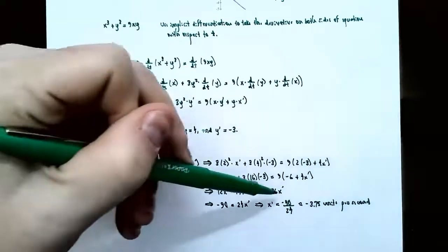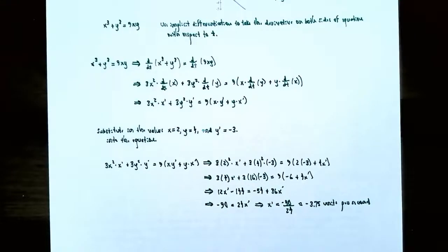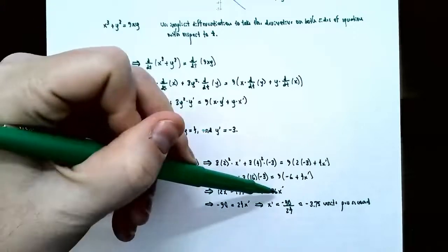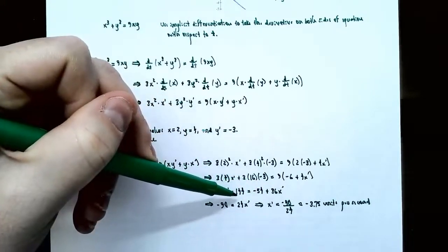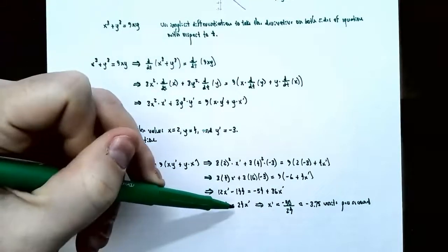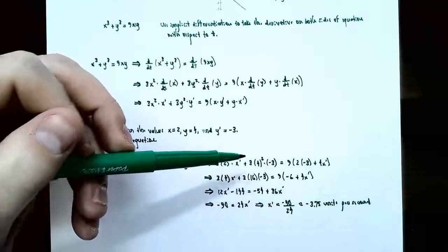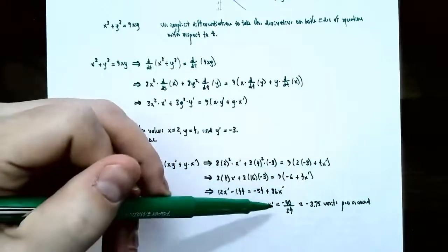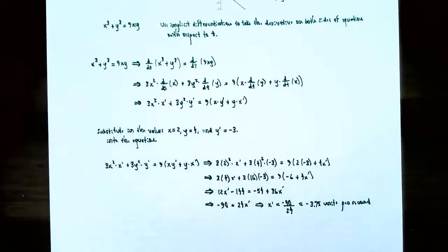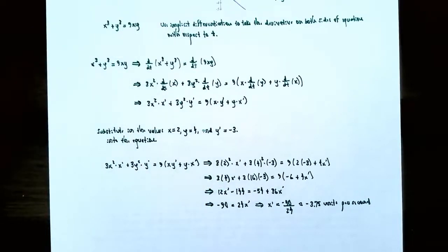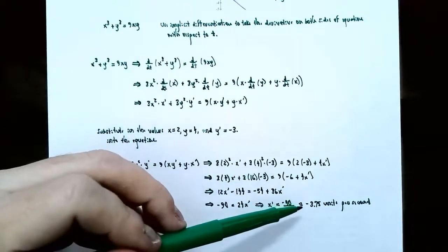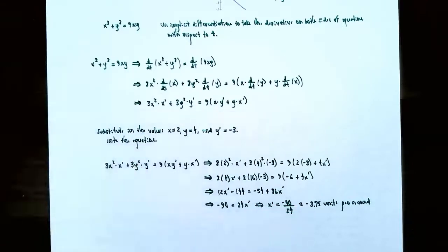Collecting x prime terms on one side: subtract 12 x prime from both sides and add 54 to both sides to get negative 90 equals 24 times x prime. Dividing both sides by 24 gives x prime equals negative 90 divided by 24, which equals negative 3.75 units per second. So when the point is at (2, 4) and the y coordinate is decreasing at 3 units per second, the x coordinate is also decreasing at 3.75 units per second.